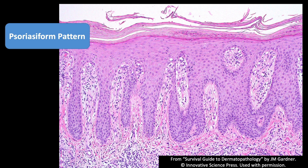The other thing psoriasis has is loss or diminishment of the granular layer. The granular layer is totally wiped out — you can barely even see it — and there's a bunch of parakeratosis, like wall to wall. If you go across the slide, almost all of the corneal layer is parakeratosis. Whereas in spongiosis, as I showed you earlier, you tend to have more patchy little foci of parakeratosis.